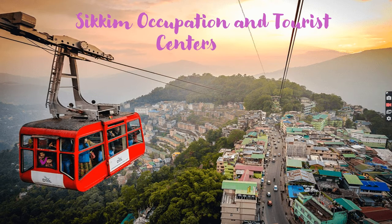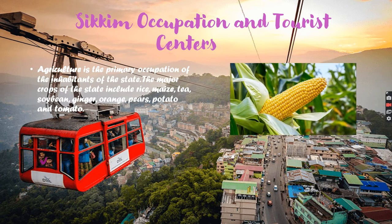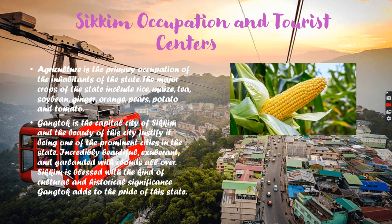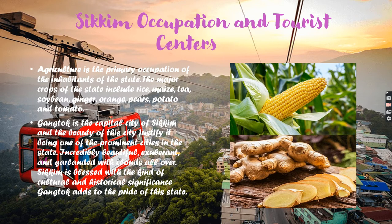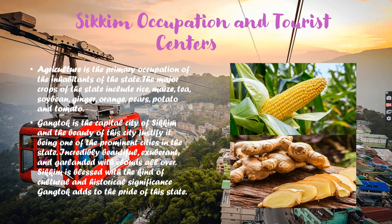Sikkim occupation and tourist centers: agriculture is the primary occupation of the inhabitants of the state. The major crops include rice, maize, tea, soybean, ginger, orange, pears, potatoes and tomatoes. Gangtok is the capital of Sikkim. The beauty of the state justifies it being one of the most prominent cities — incredibly beautiful, exuberant and garlanded with clouds. Sikkim is blessed with rich cultural and historical significance, and Gangtok adds pride to this state.